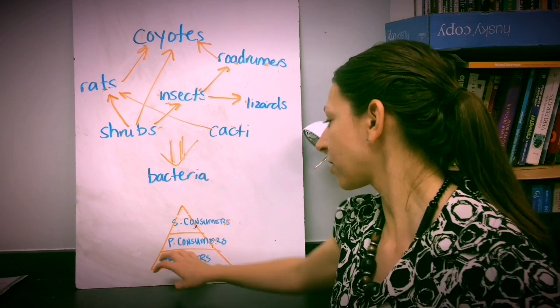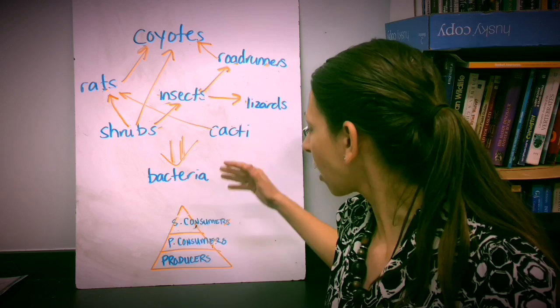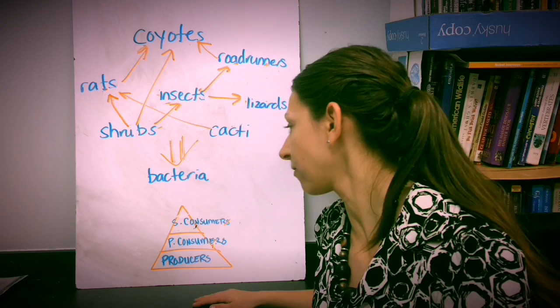If we go up a trophic level, we have our primary consumers. These are going to have a little bit less energy. Actually, 90% of energy is lost as heat to the environment every time you go up a trophic level. And then secondary consumers.